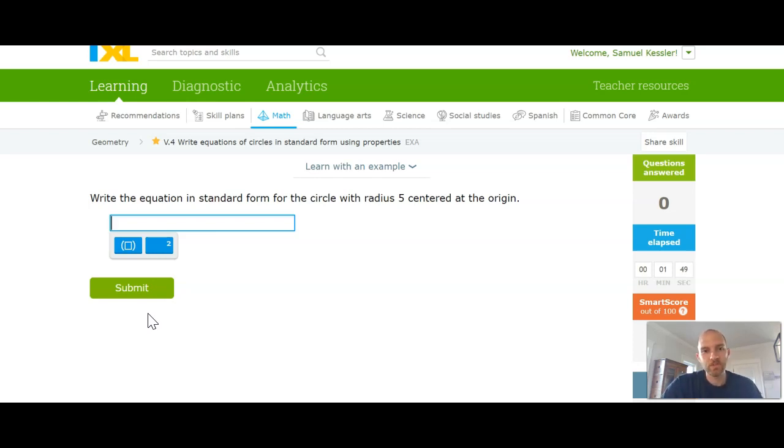The only real thing we'll need to know is either a radius or diameter and the center of a circle. Now on this first one it says we have a circle with a radius of 5 centered at the origin. Anytime it's centered at the origin, we're just going to have x squared plus y squared equals the radius squared. Since our radius is 5, we'll square 5. 5 squared is 25. We're good to go.